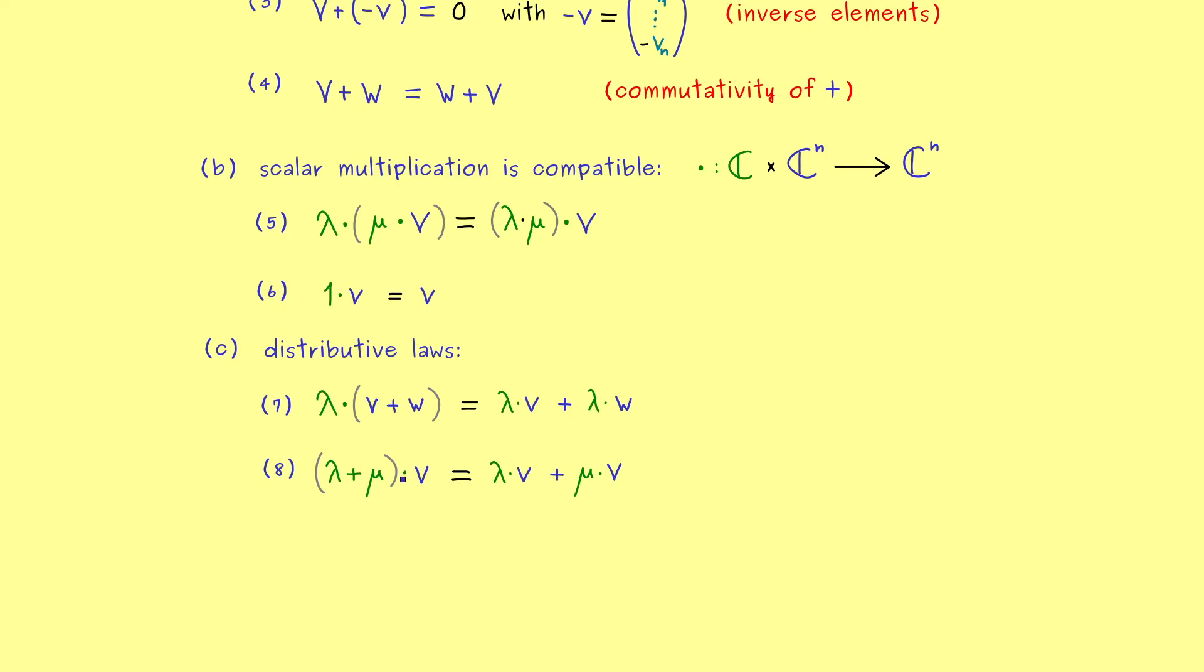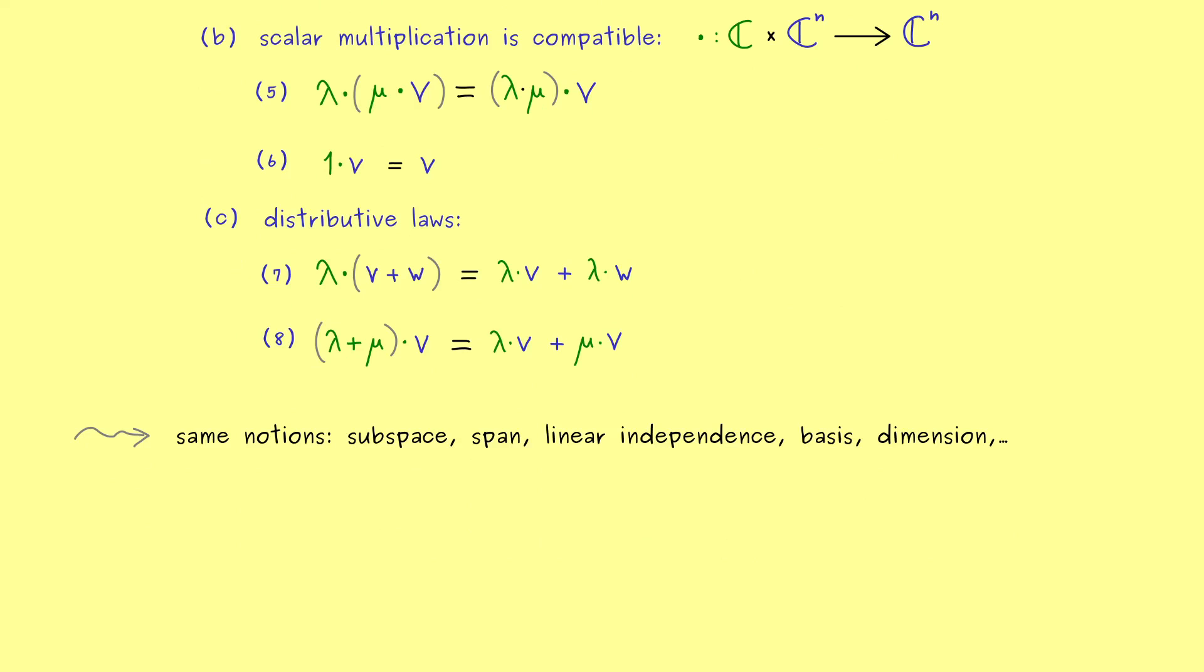However you should see all the properties here are literally the same. And therefore also all calculation rules are exactly the same as in R^n. So nothing really changes. Which also means we can adopt all the other notions as well. This means all the definitions for example for subspaces, the span, linear independence, basis, dimension look all the same if we replace R^n with C^n in the definition. And that's exactly what we will do but without writing it down again.